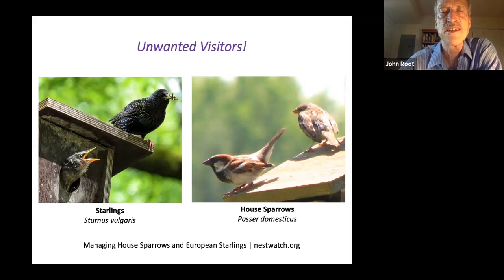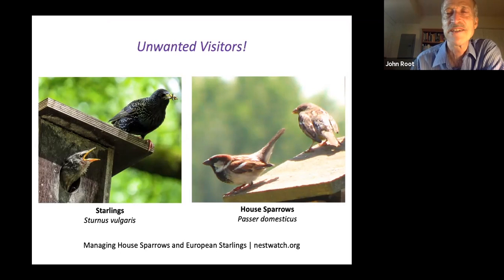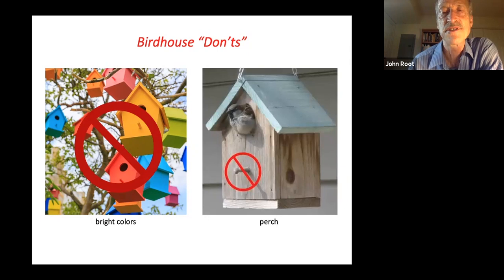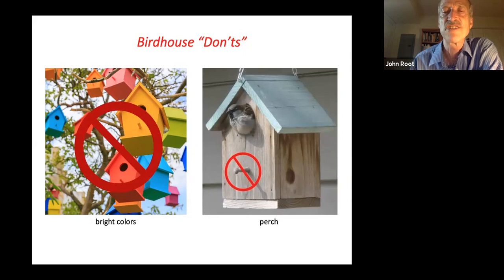Please do not put out bird houses that are brightly colored because it calls attention to predators. Those perches that you sometimes see on bird boxes are totally unnecessary — birds can fly right to the hole and don't need them — but the perches can be useful to a predator trying to gain entry. You should not use any other material besides wood in a bird house and you should not let it dangle from a string; it should be securely fastened. To protect bird houses from squirrels, prevent them from being able to chew that hole and widen it by putting on a piece of metal hardware with a circle in it.